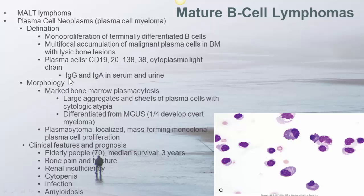IgG and IgA are secreted by the neoplastic plasma cells and can be found in serum and urine. The characteristic morphology of plasma cell myeloma or multiple myeloma is marked bone marrow plasmacytosis, featured as large aggregates and sheets of plasma cells with cytological atypia, such as increased nuclear-to-cytoplasm ratio, dispersed chromatin pattern, and distinct nucleoli.